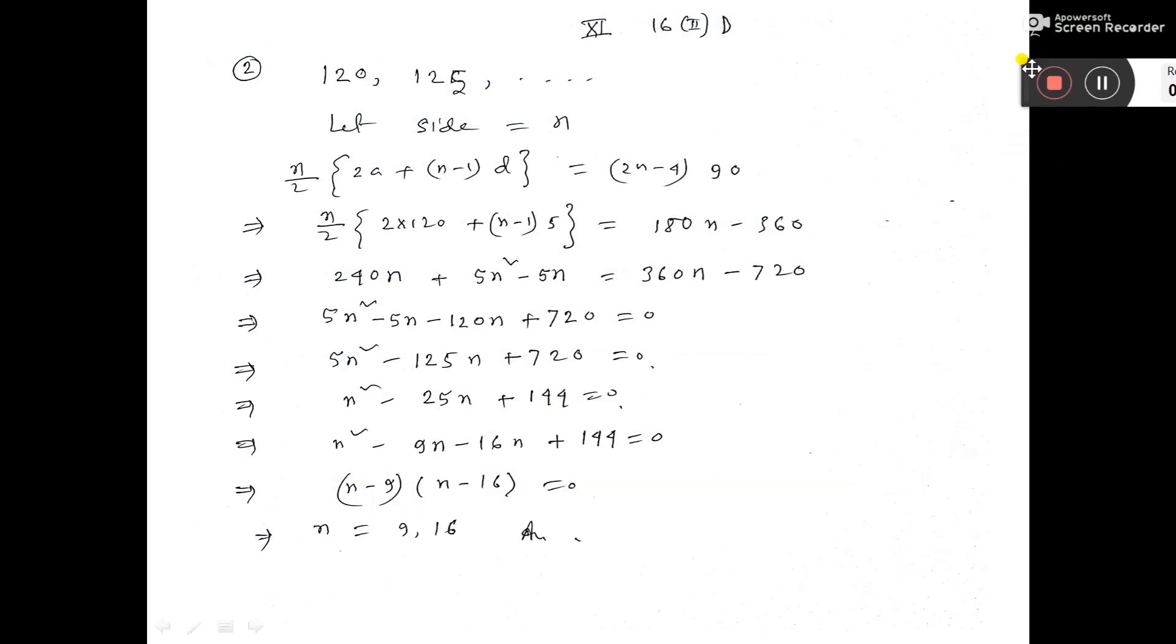Let us do number 2. In this question, it is telling that the interior angles of a polygon are in AP. The smallest angle is 120.